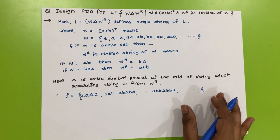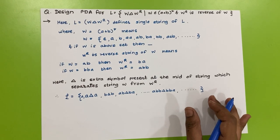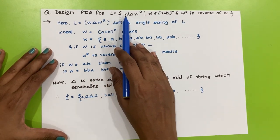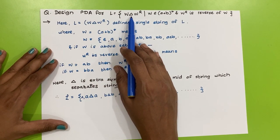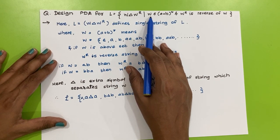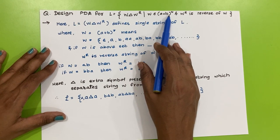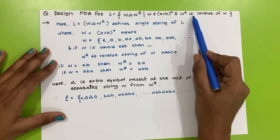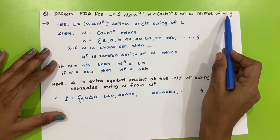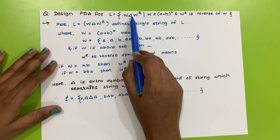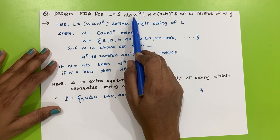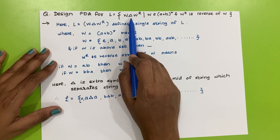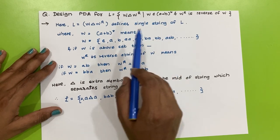Hello friends, welcome back to the channel Learn With R. The next example of PDA is here. The language is L = w △ w^R, where w belongs to (a+b)* and w^R is the reverse string of w. The triangular delta △ is a special symbol that occurs at the mid of the given string.